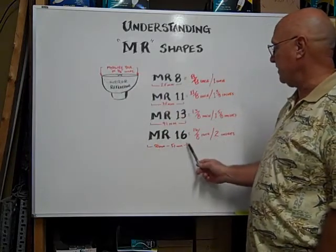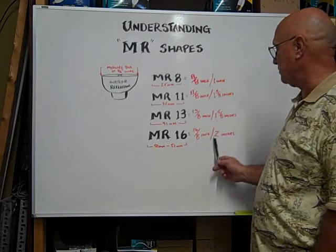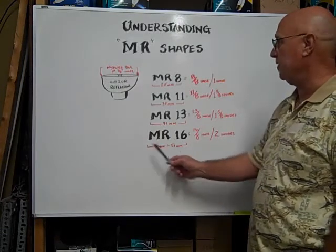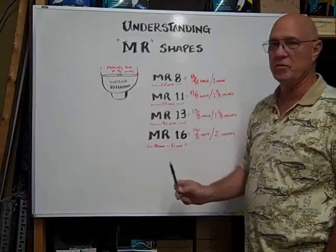The MR-16 is sixteen-eighths of an inch, which is equivalent to two inches, or fifty to fifty-one millimeters across the diameter of the mirror reflector face.